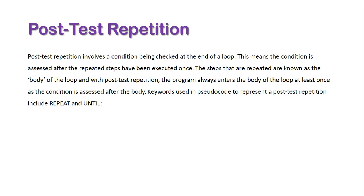In post-test repetition, a condition is checked at the end of a loop. This means that the condition is assessed after the repeated steps have been executed once. The steps that are repeated are known as the body of the loop, and with post-test repetition, the program always enters the body of the loop at least once as the condition is assessed after the body. Keywords used in pseudocode to represent post-test repetition include REPEAT and UNTIL.